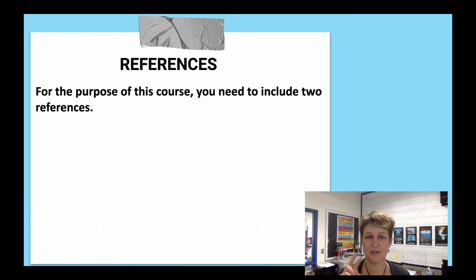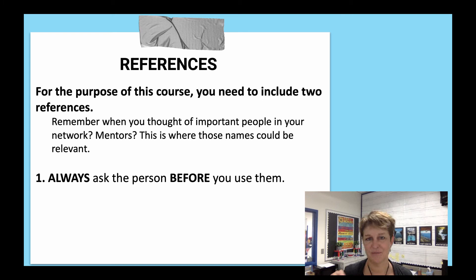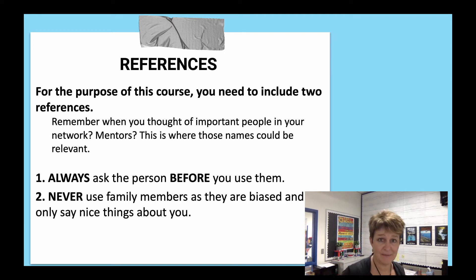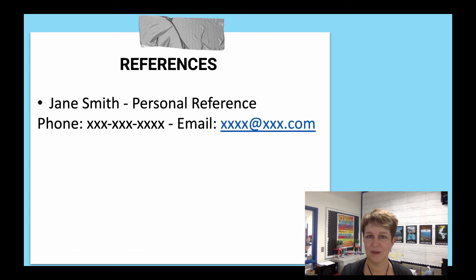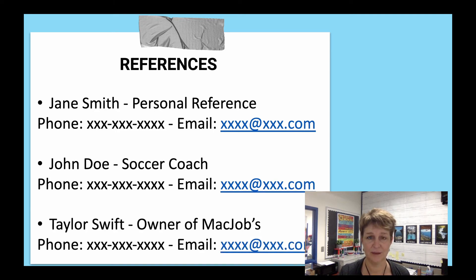For this course, you should include two references. These could come from mentors or important people in your network. Always ask a person before you use them as a reference, and never use family members as they're biased. If you work for a family business, find someone else in the business who could serve as a reference. Include their name, official title or relationship, and preferred contact information — for example, a soccer coach or business owner with their contact details.